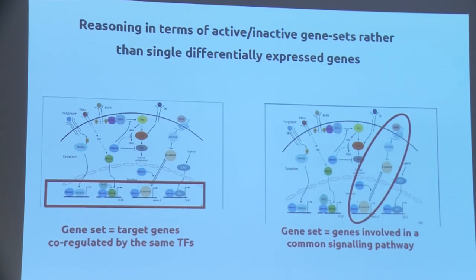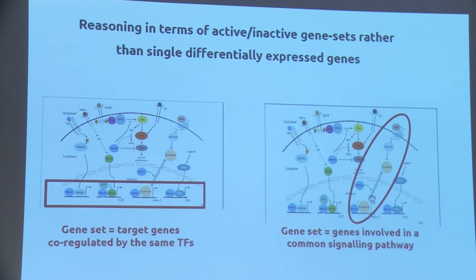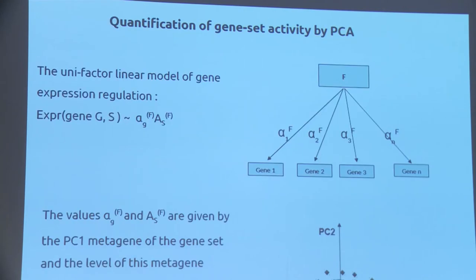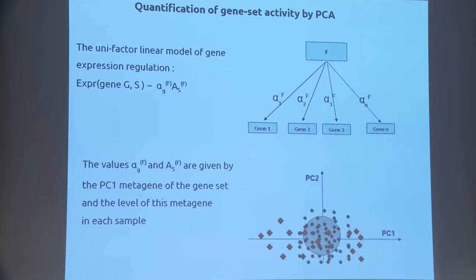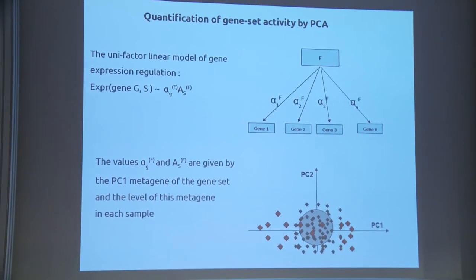The idea of a gene set means we define groups of genes considered to have coordinated expression. These can be, for instance, targets of common transcription factors, downstream targets, or genes involved in the same signaling process. There are many ways to define these sets. Once defined, we can quantify the activity of the whole set.